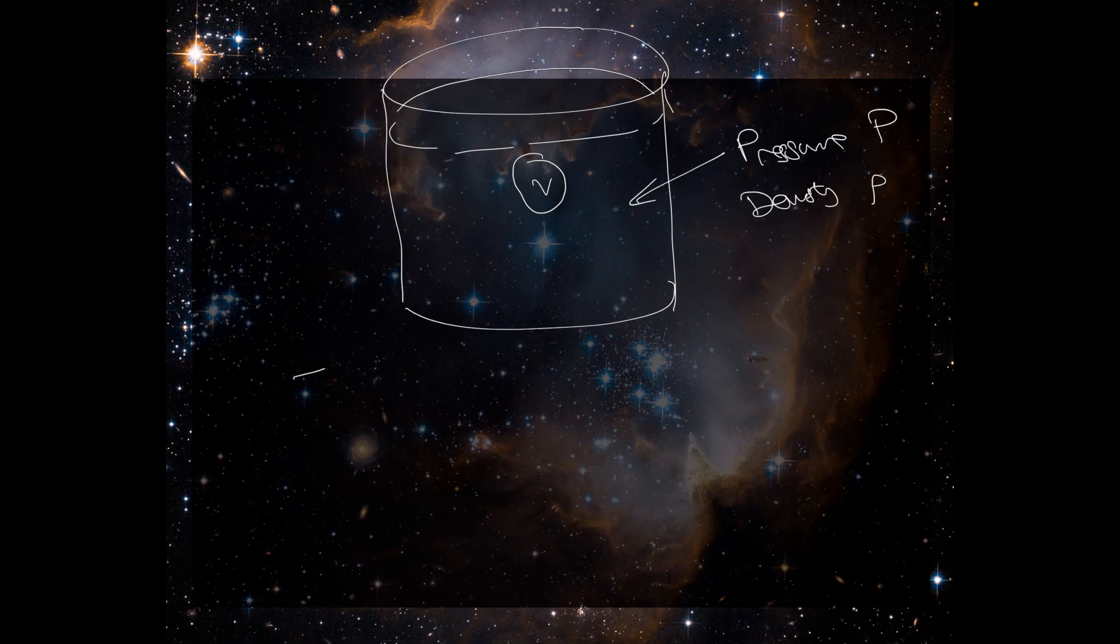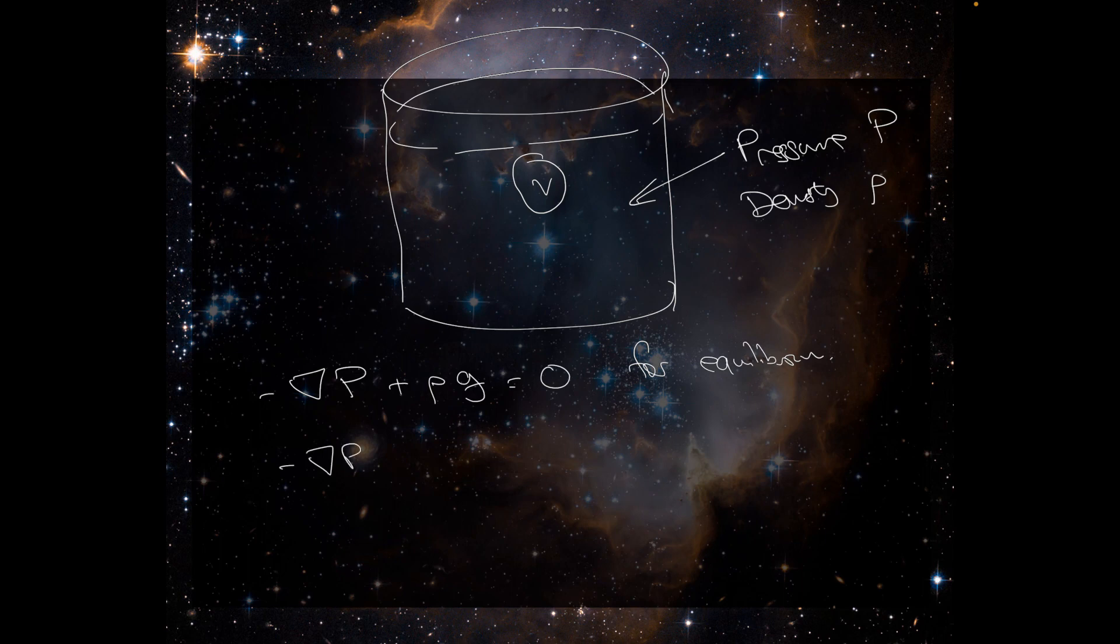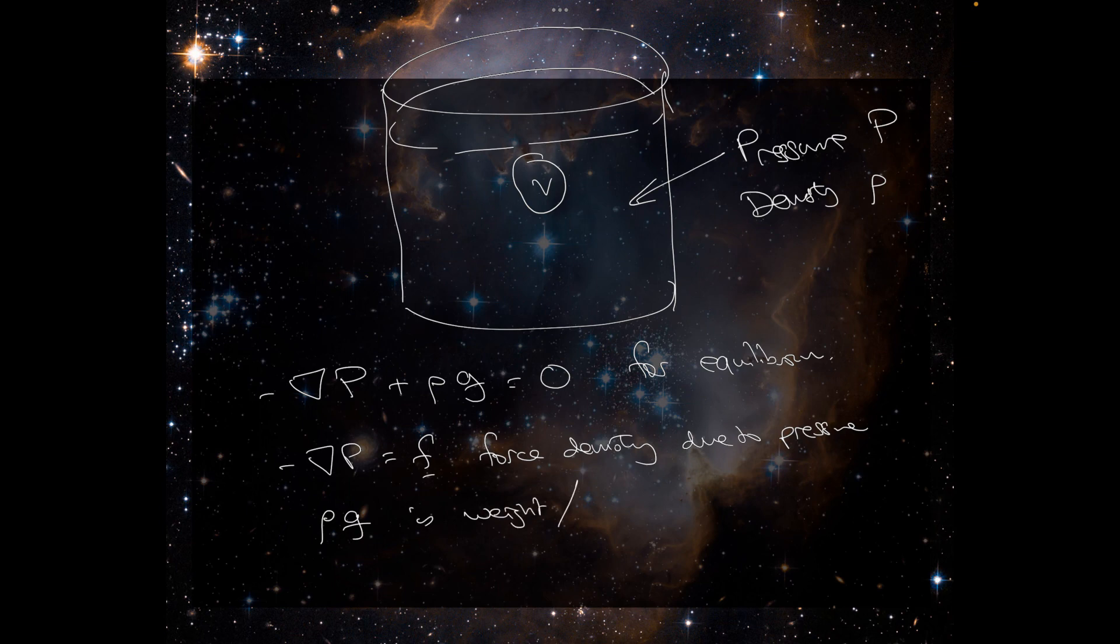Now the gradient of the pressure plus rho times G is equal to zero for equilibrium. This is because minus grad P is the force density due to the pressure, and rho G is the weight per unit volume.